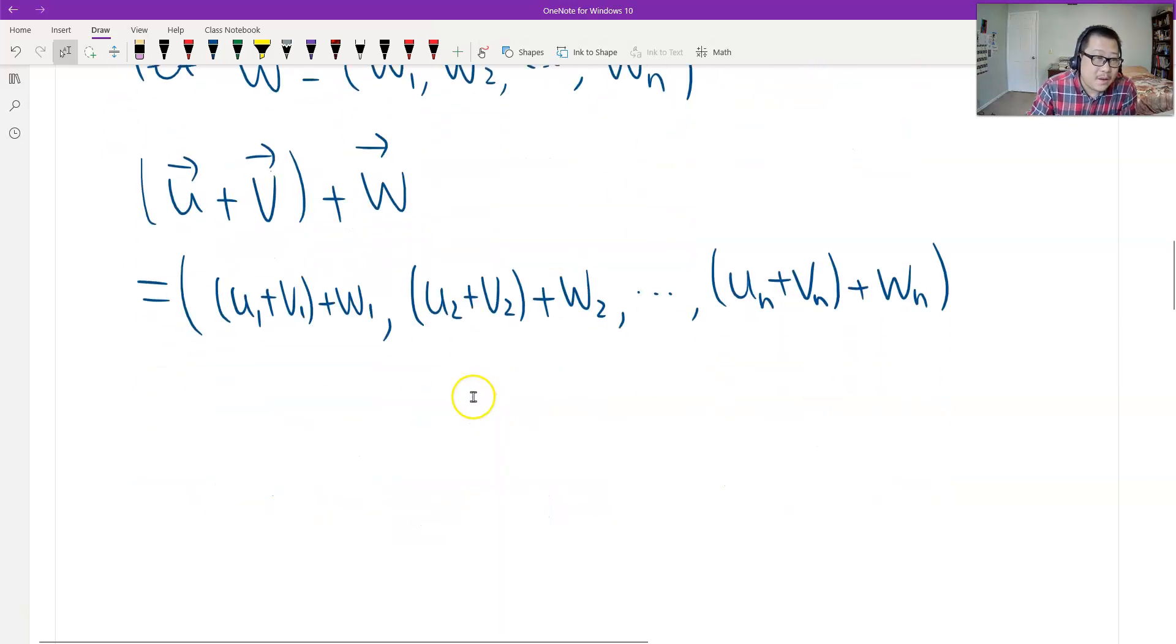And then we can associate. So now think about it. I can associate these two first. Because these three numbers, scalar numbers, I can associate. So I get u1 + (v1 + w1). That's true.